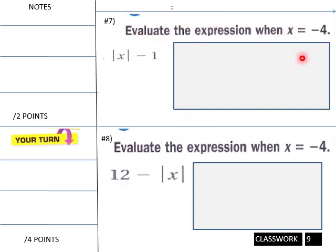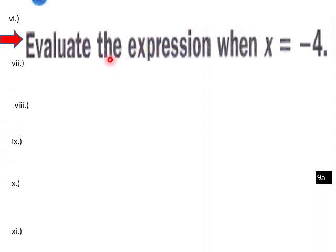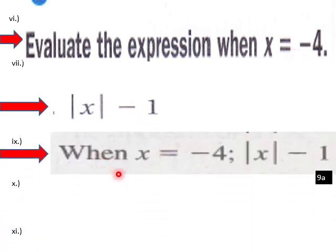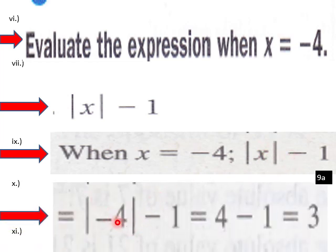Guided practice: evaluate the expression when x equals negative 4. We plug in negative 4 for x, giving us the absolute value of negative 4 minus 1. The absolute value of negative 4 is 4, and 4 minus 1 equals 3. That is the evaluation of this expression when x equals negative 4.